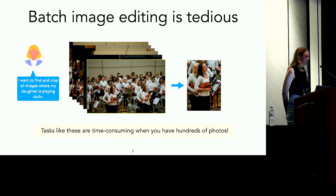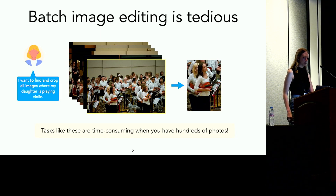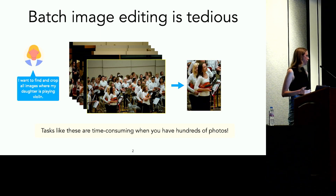To explain what we mean by batch image editing, let's look at this example. Suppose that Alice has hundreds of photos from her daughter's school recital, and she would like to find all the images where her daughter is holding a violin, and crop those images to contain just her daughter and the violin. A task like this is pretty easy if you have just a couple of images, but if you have hundreds, like Alice does, it can be really time-consuming and tedious.